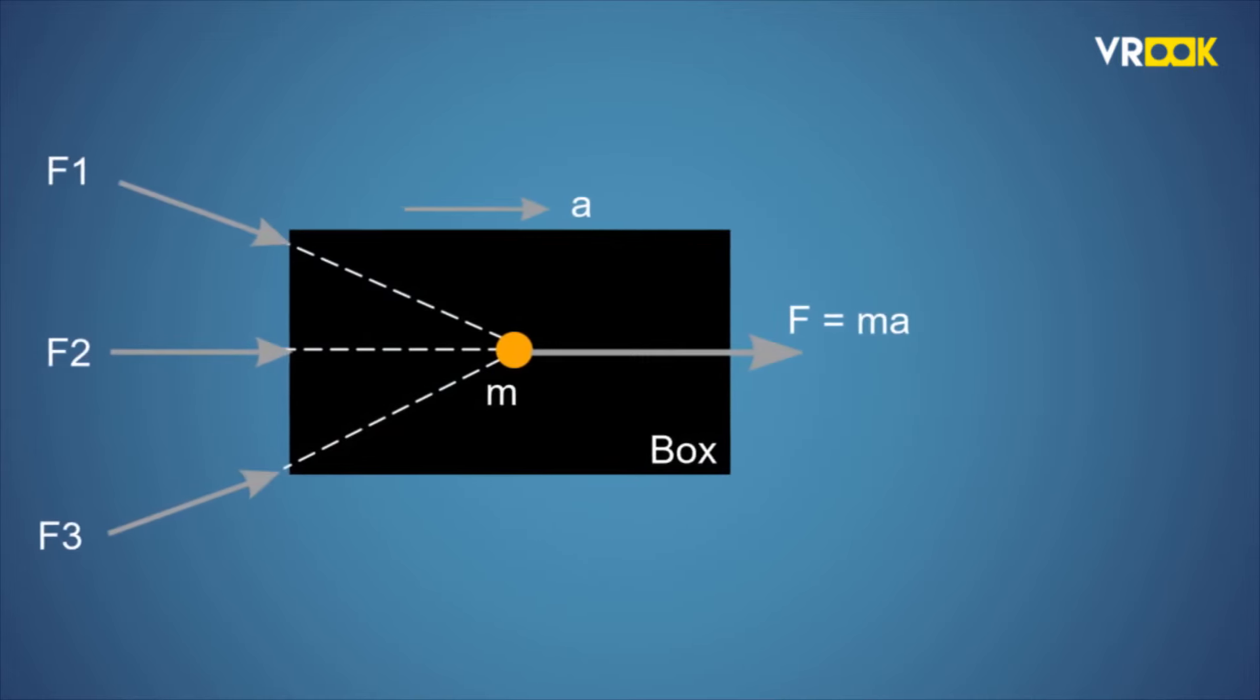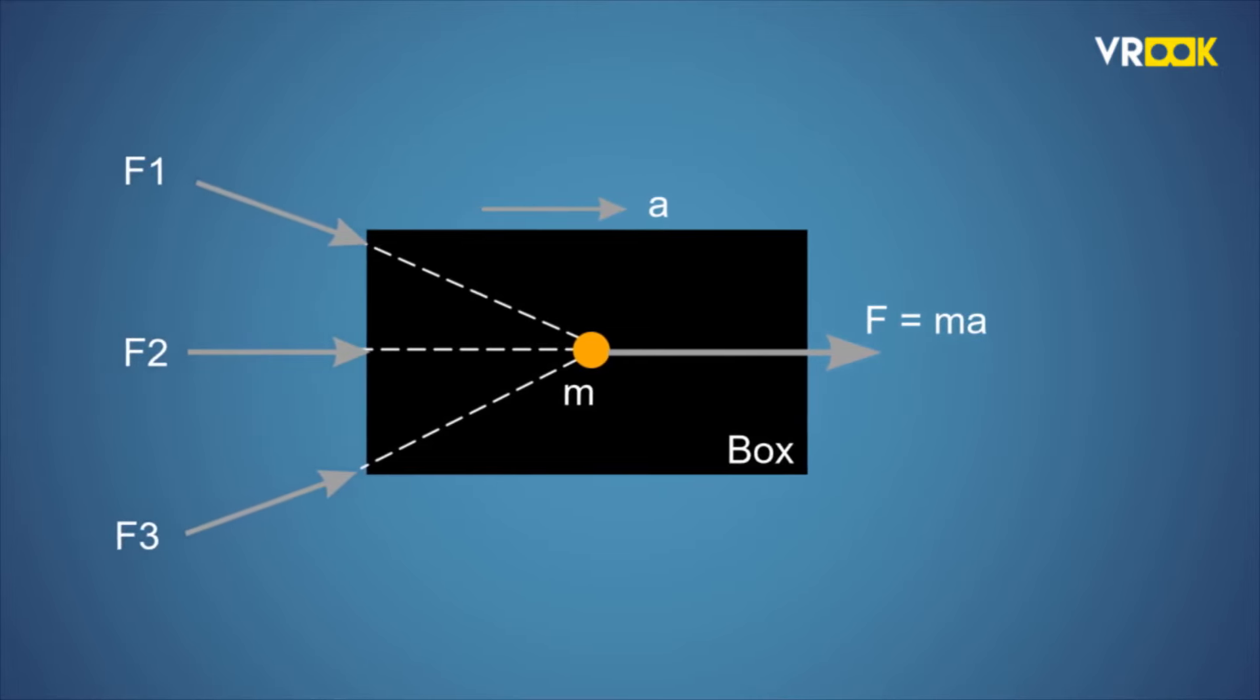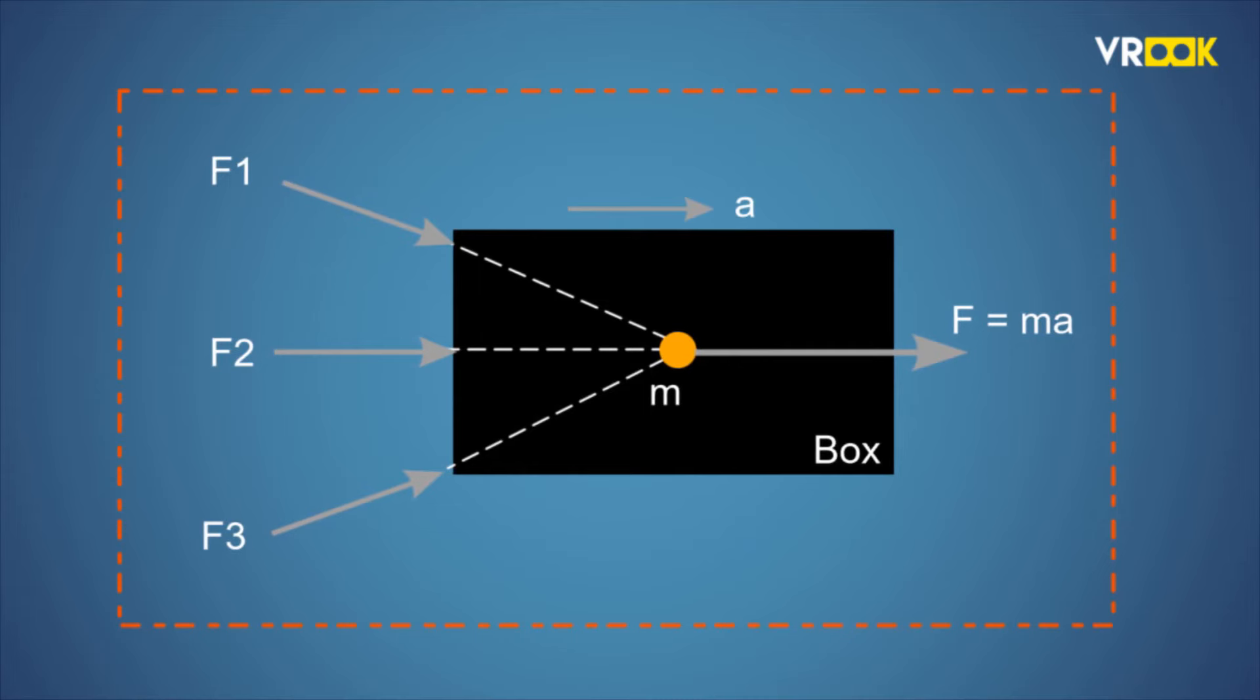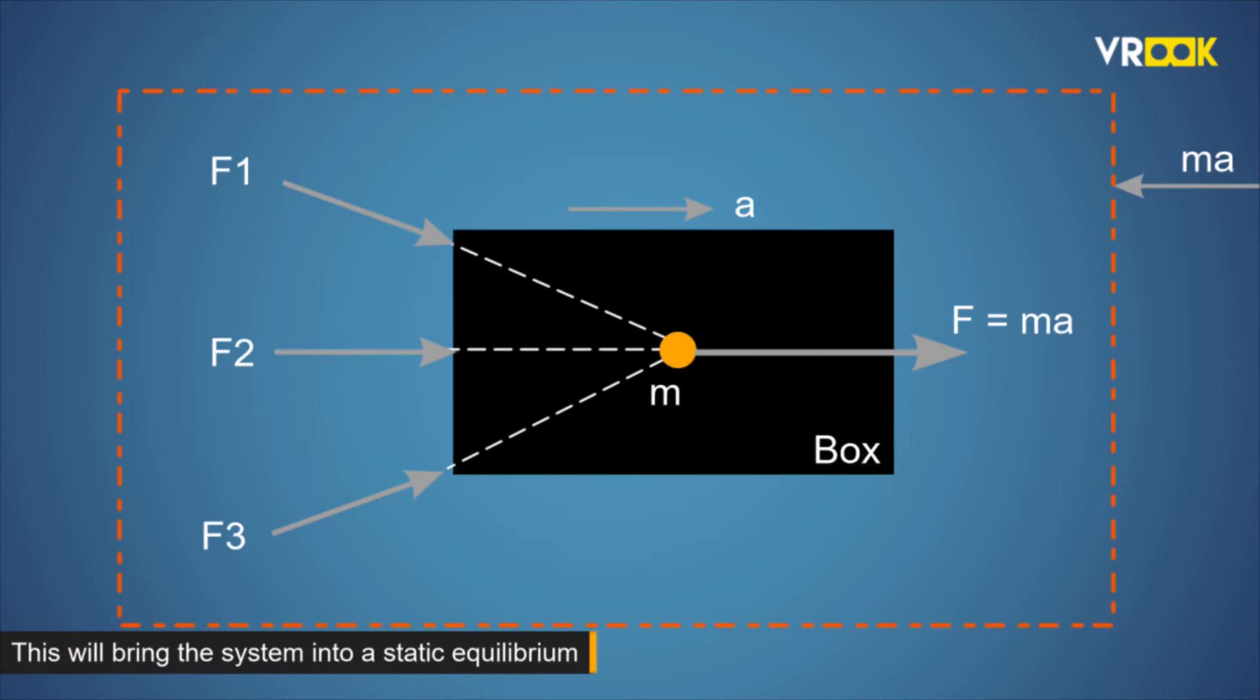ma is the force behind the motion of the box here. Now, according to D'Alembert's Principle, we need to consider this whole system and apply another force minus ma in the opposite direction of the original force ma. This will bring the system into a static equilibrium.